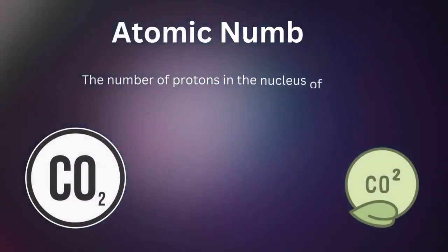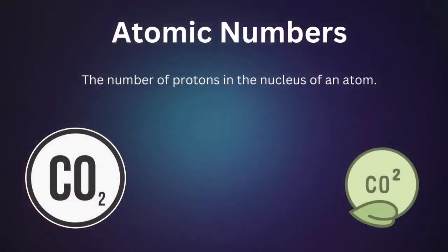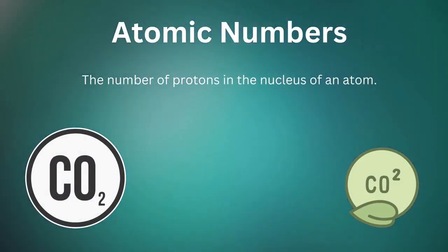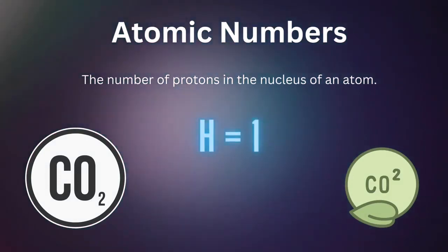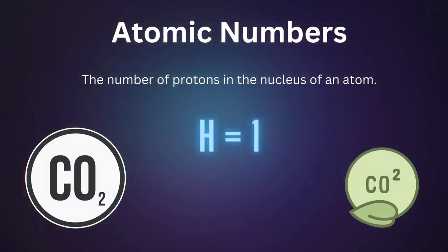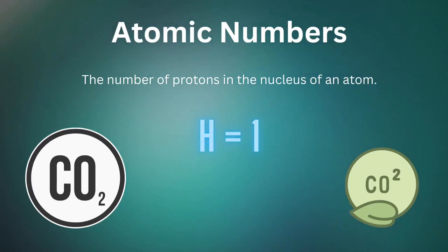Every element is characterized by its unique atomic number. The atomic number is the number of protons in the nucleus of an atom. For example, hydrogen has one proton, so its atomic number is one.